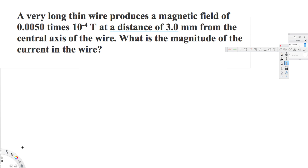Let's look at this problem. The question is asking: a very long thin wire produces a magnetic field of 0.005 times 10 to the power of minus 4 tesla at a distance of 3 millimeters from the central axis of the wire. What is the magnitude of the current in the wire?